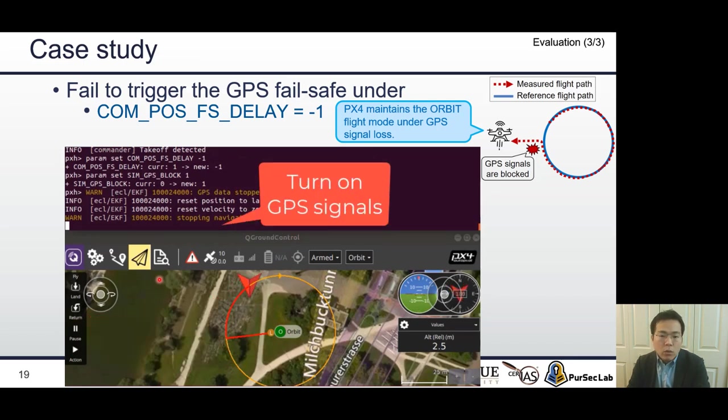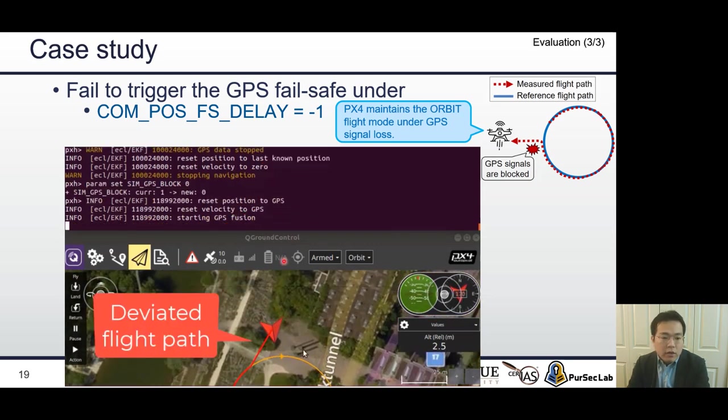When we return GPS signals on the simulator, as you can see, the vehicle shows a deviated flight path. This failure to trigger GPS failsafe will be dangerous behavior because it is likely to cause physical crash to buildings or any other object.